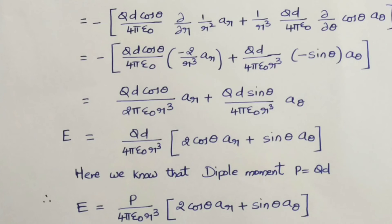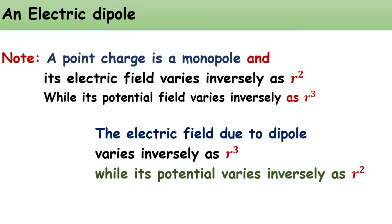An important observation: a point charge is a monopole and its electric field varies inversely as the square of distance r², while its potential varies inversely as r. For a dipole, the electric field varies inversely as r³, while its potential varies inversely as r².